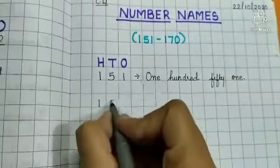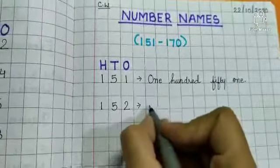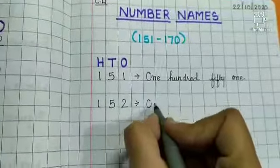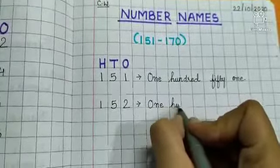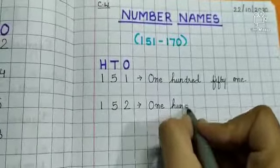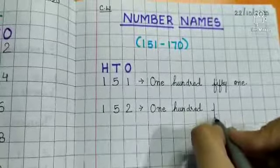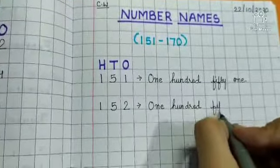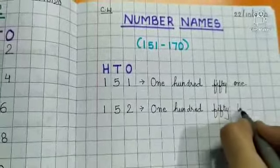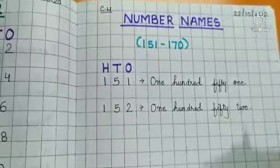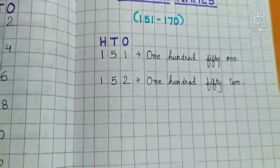Then 152. O-N-E 1, H-U-N D-R-E-D 100, F-I-F-T-Y 50, T-W-O 2. 152.